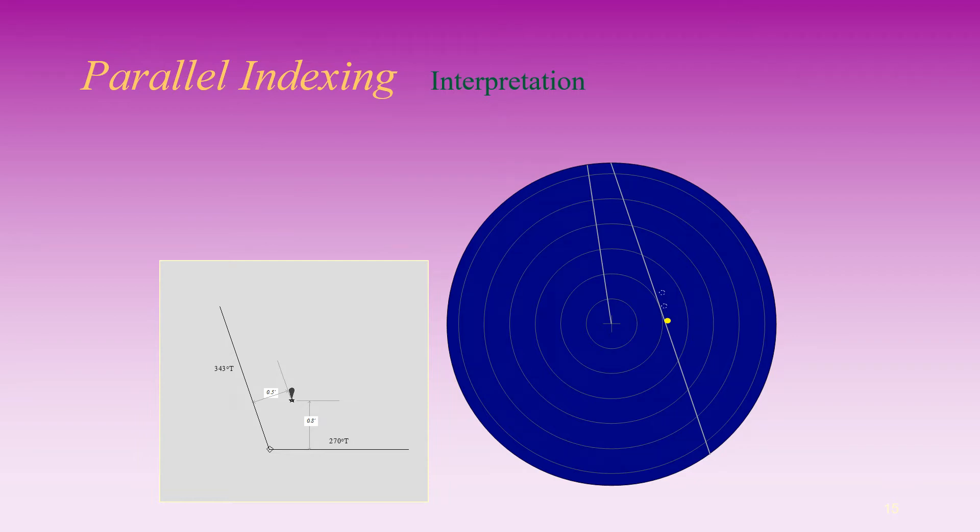Vessel is now back on track on the second leg, 343 degrees true. Heading should be adjusted to maintain vessel on track.